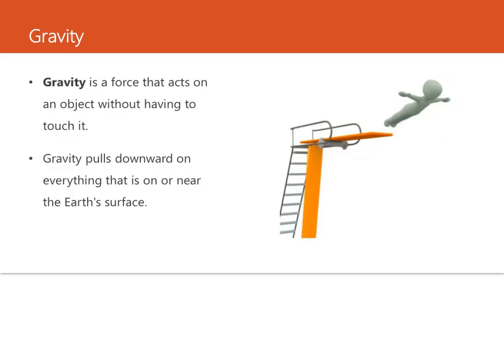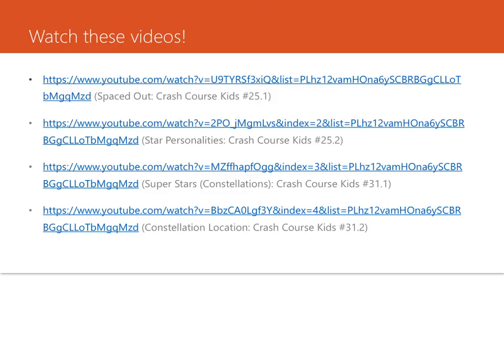Gravity is a force that acts on an object without having to touch it. Gravity pulls downward on everything on or near the earth's surface, even if things aren't touching the surface. Gravity pulls everything that falls — such as fruit from a tree or a diver jumping from a diving board — toward the center of the earth. When an object is lifted, the force of gravity must be overcome. Very heavy things are harder to lift because the force of gravity is stronger for objects with more mass.